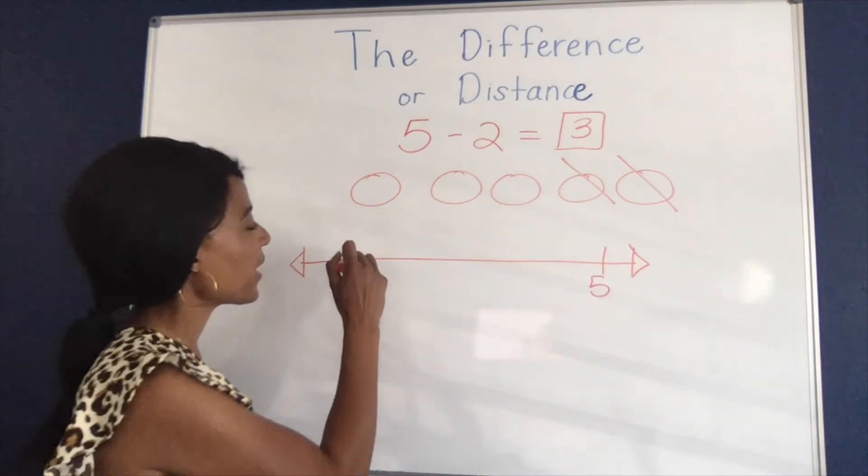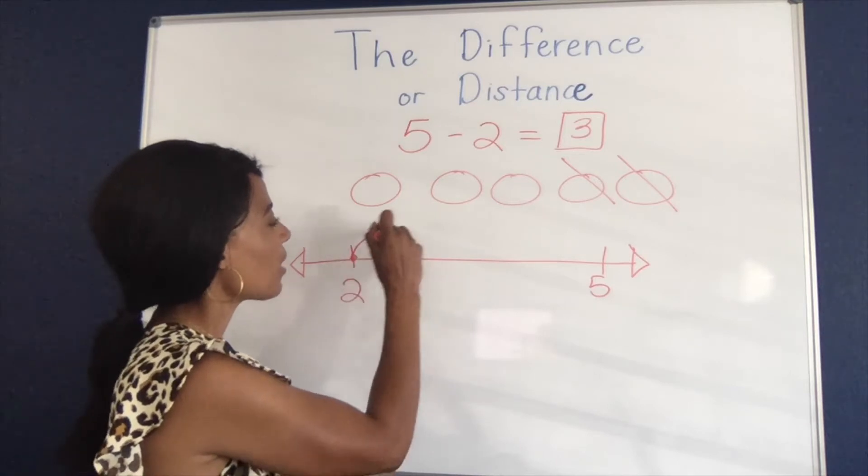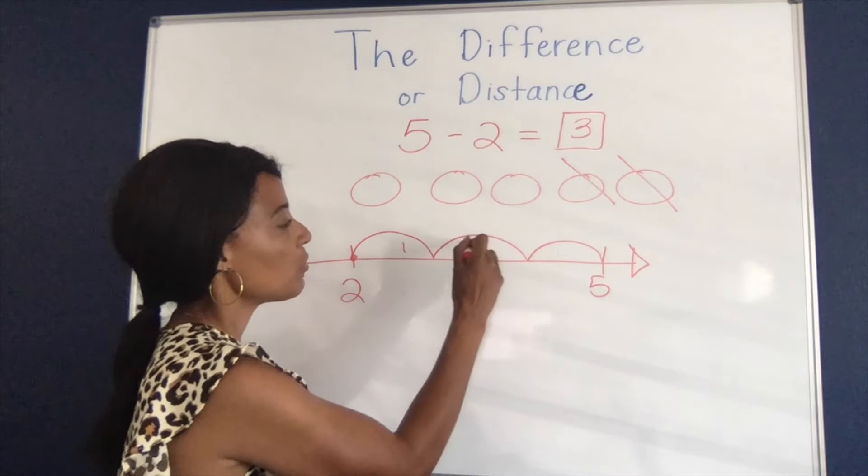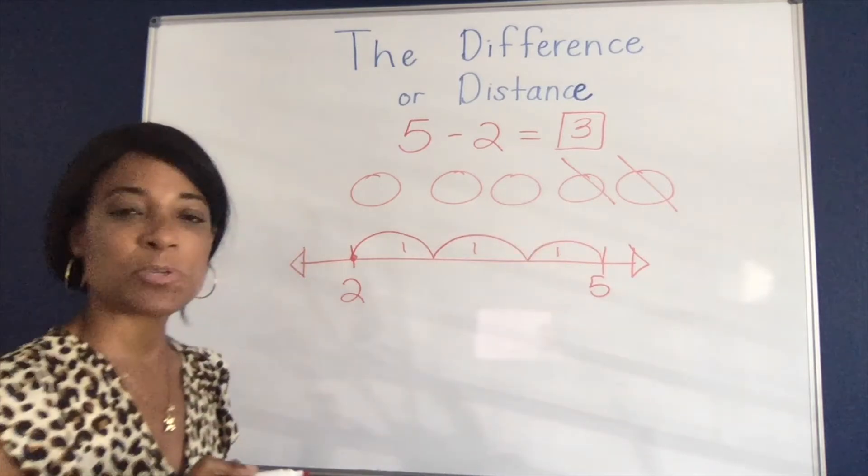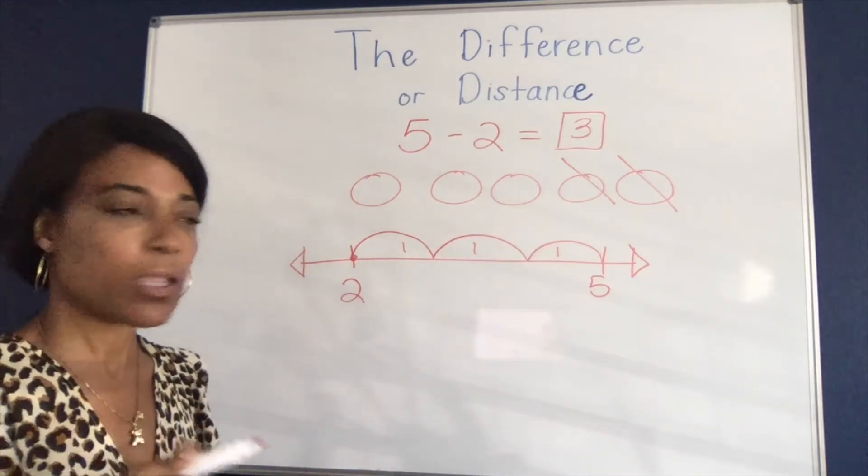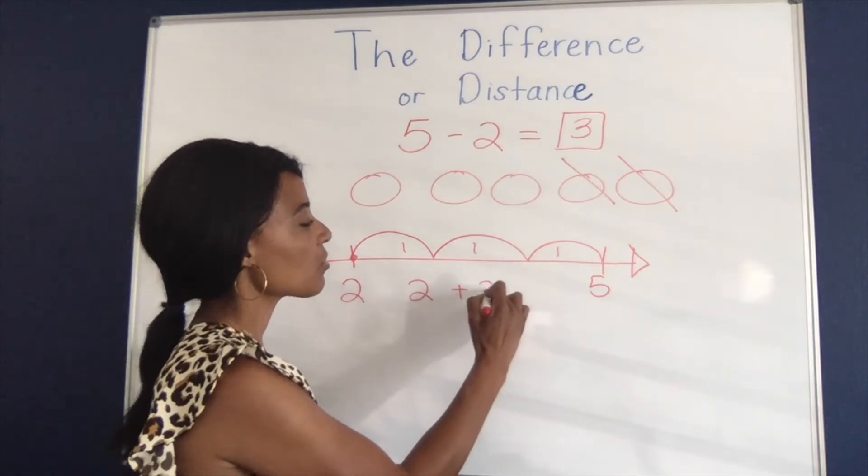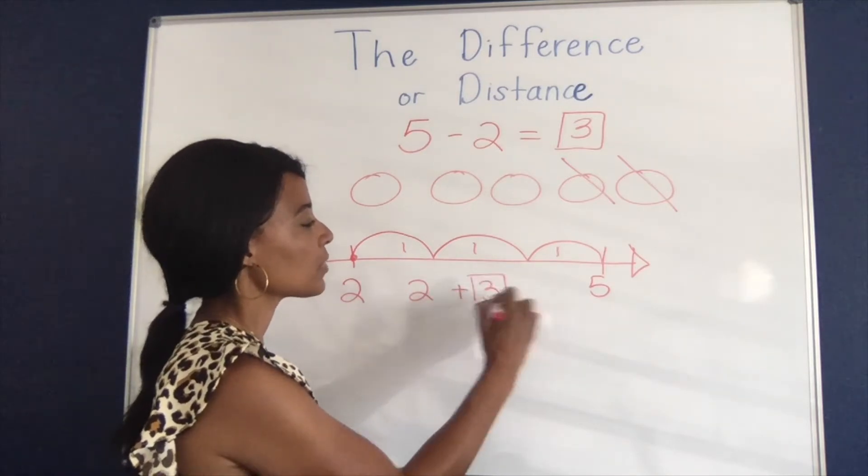So some students might start at two and count up three, four, five and notice that the difference between those numbers is three. So their equation would look like 2 + 3 = 5.